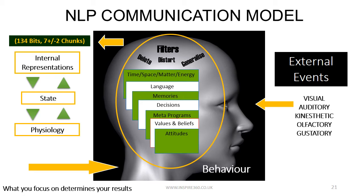Distortions happen when we make shifts of data in our sensory experience by misrepresenting what is real. For example, this can happen when we mistake somebody for somebody else, or when we think somebody said something when in fact they said something else, or even imagining how the interior of a room would look before you decide to decorate it. This is still a distortion, though a positive one.